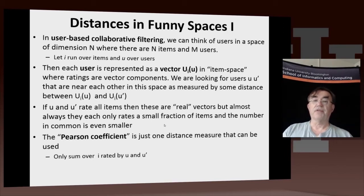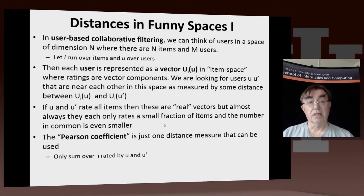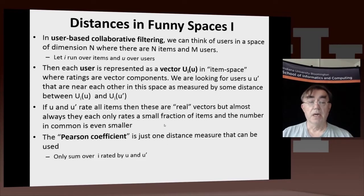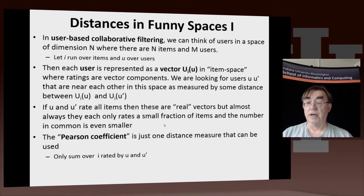One way of thinking of this problem is in a space which has dimension n. This is a space which has coordinates — we have one coordinate for every item, and the number of points in the space is equal to the number of users. Every user is represented by a vector in the space, where that vector has a component for every item.